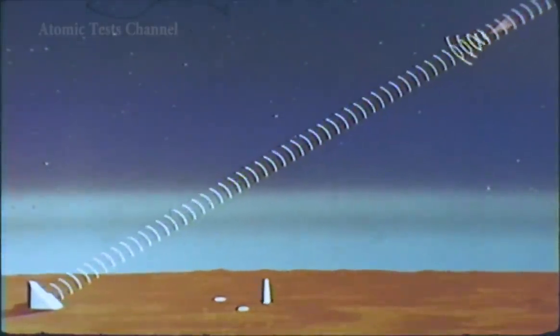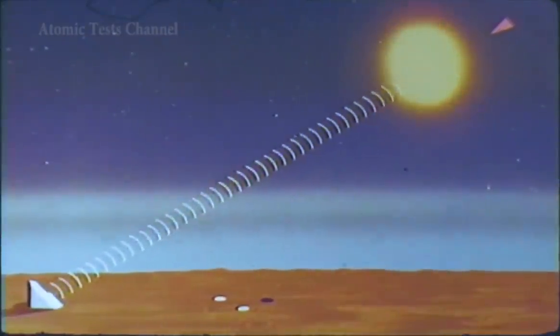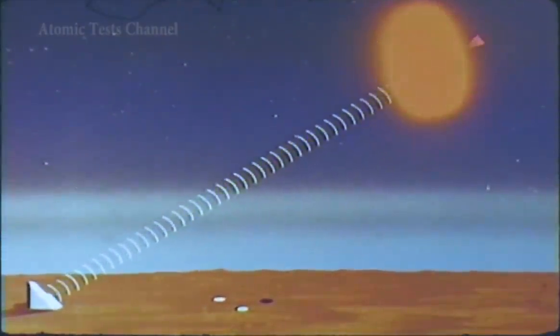The first re-entry vehicle is intercepted with a high-yield warhead at an altitude of 250 kilometers. Radar tracking of the remaining re-entry vehicles is predicted to be degraded by signal absorption in the ionization of the defense explosion.